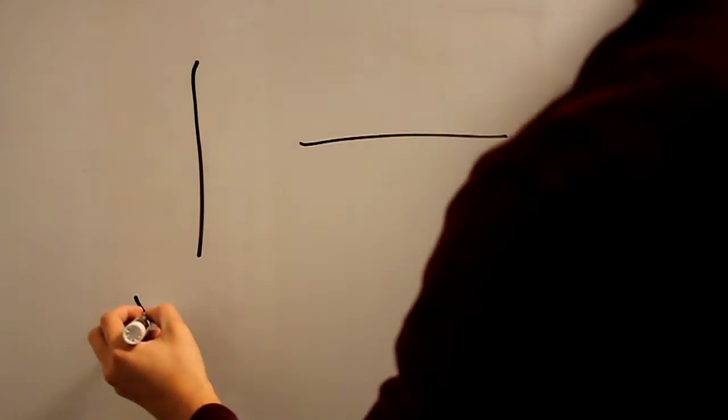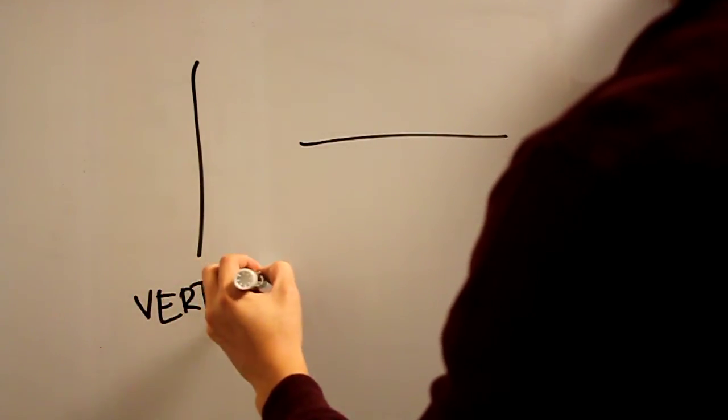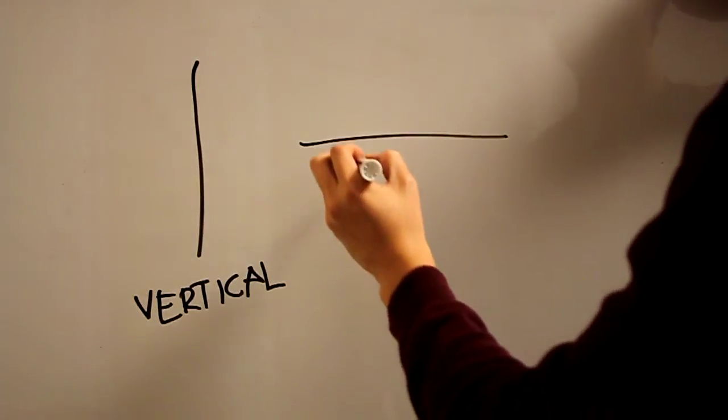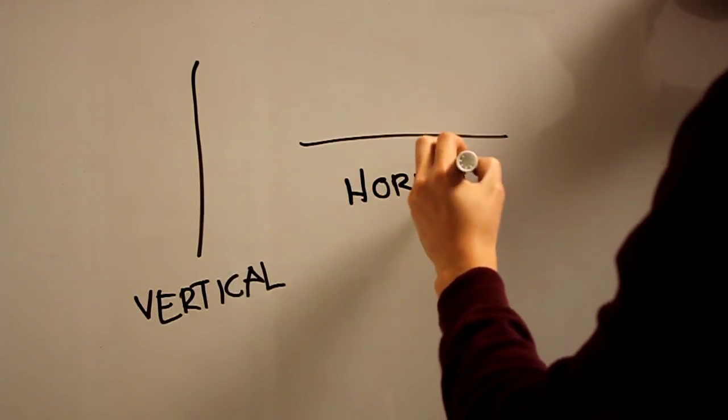You have vertical and you have horizontal. And it turns out that these mean, they symbolize certain things, and they're constantly symbolized the same things when you see them show up in architecture.